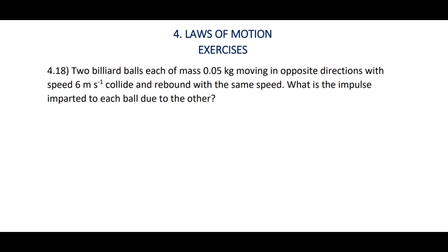Coming to problem 4.18: Two billiard balls, each of mass 0.05 kg, moving in opposite directions with speed 6 m/s, collide and rebound with the same speed. What is the impulse imparted to each ball due to the other?